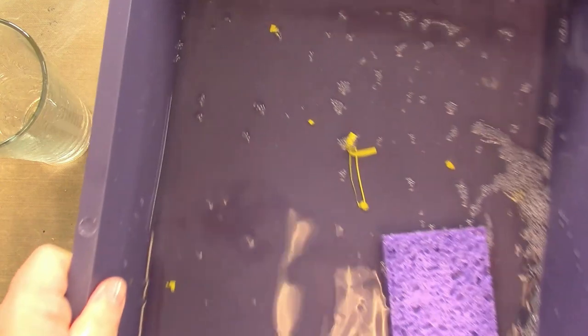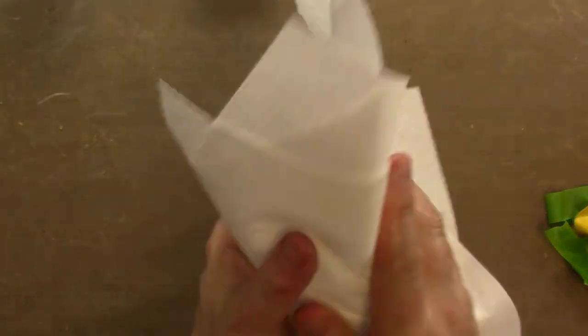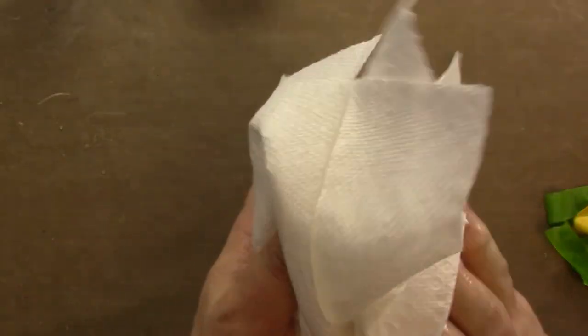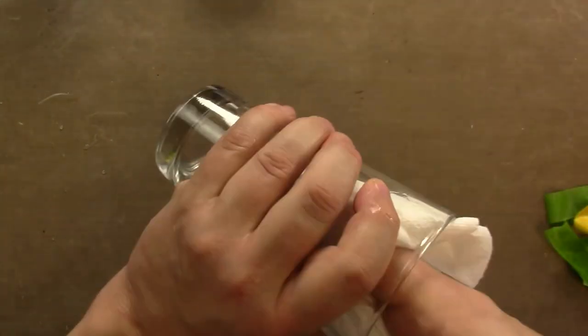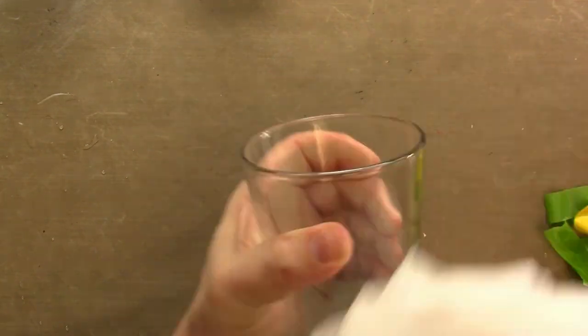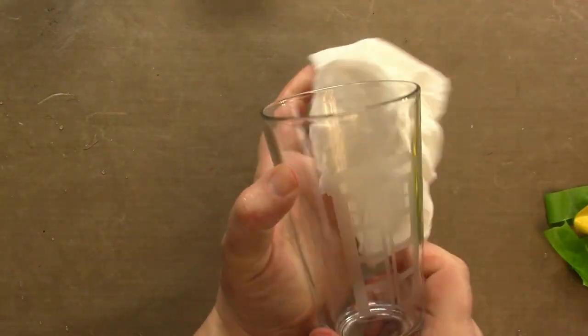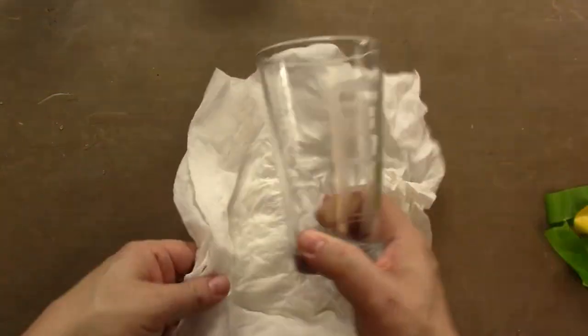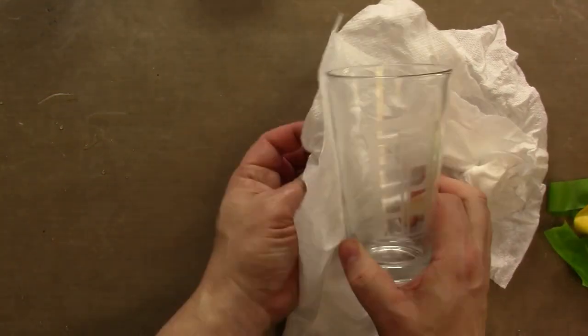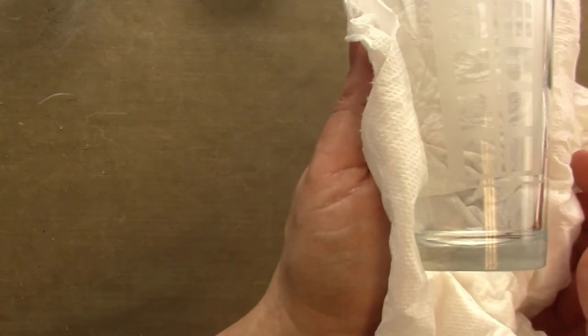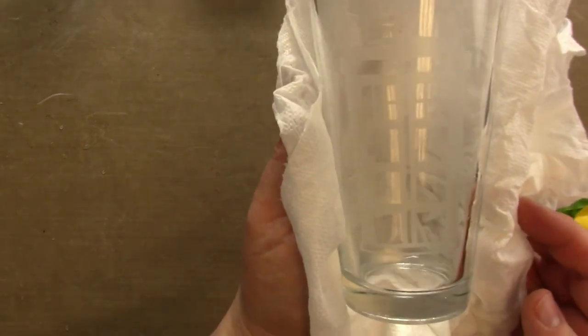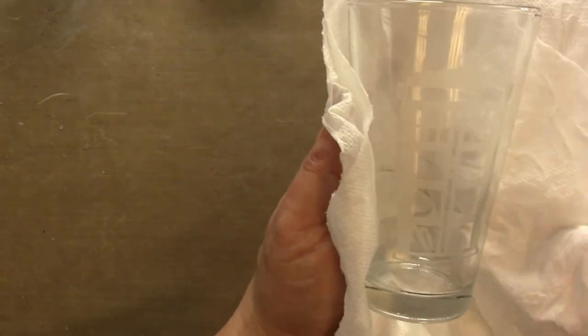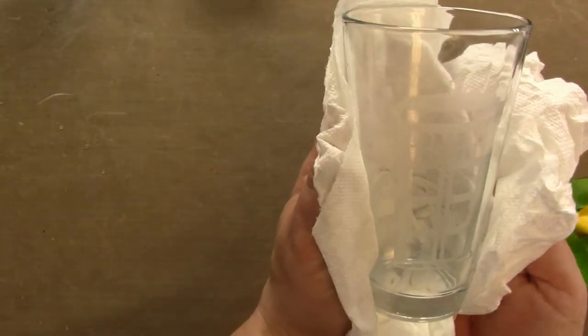Etching doesn't show up really well when it's wet, so you're not going to get that wow factor until the glass is dry. But now that the glass is nice and dry, let's see if you can see our police box. A little bit hard to see in the lighting. I think once I give you a front facing view, you'll notice it. But it's perfect.